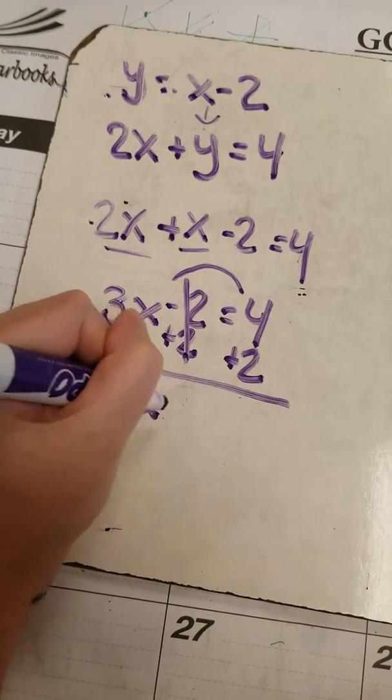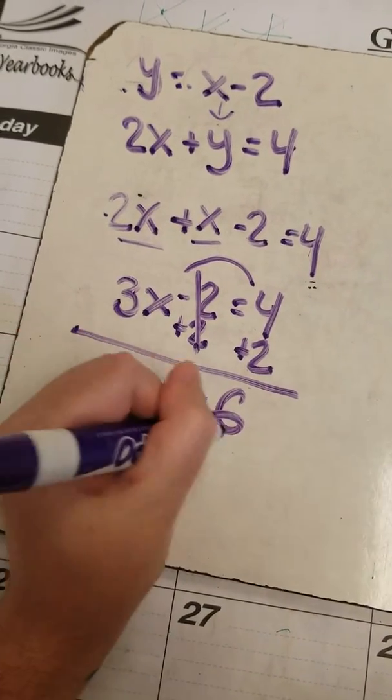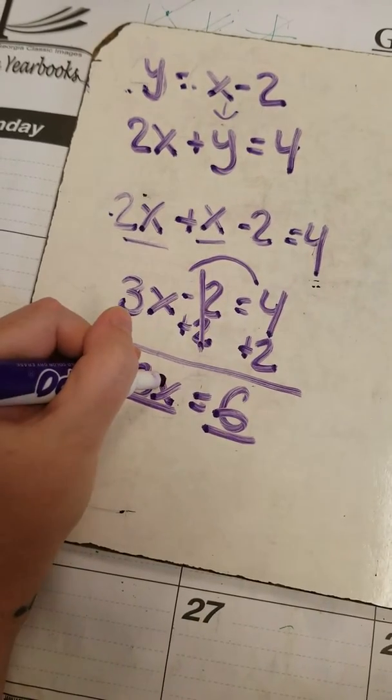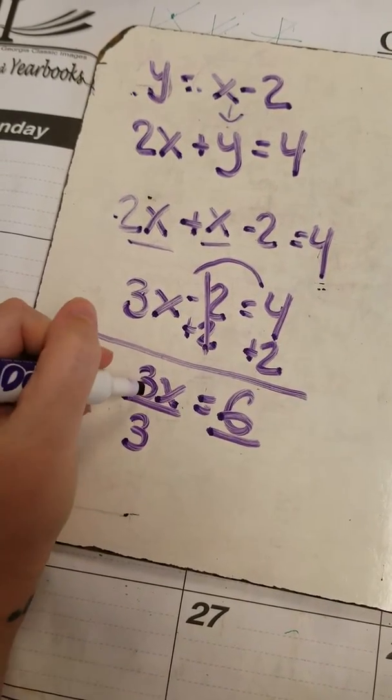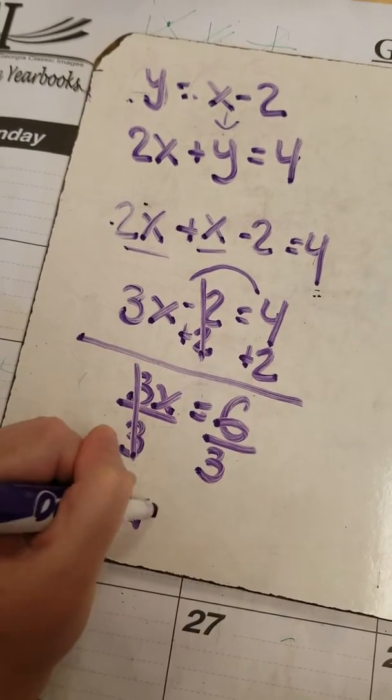I'll be left with 3x equals 4 plus 2, which is 6. Now I need to divide. The 3 and the x are together by multiplication, so the inverse of that is division. x equals 2.